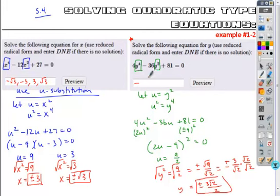So that would be my solution: negative 3 root 2 over 2 and 3 root 2 over 2. And I would have my two answers. Here we go.